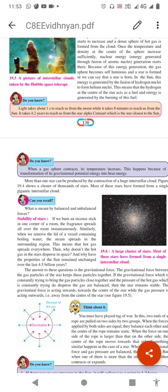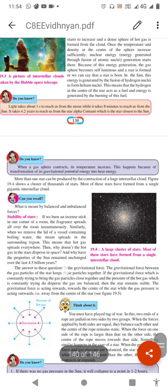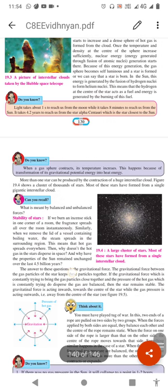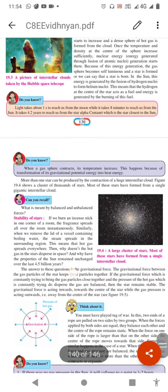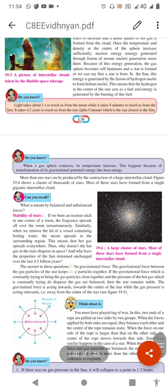When a gas sphere contracts, its temperature increases. This happens because of transformation of its gravitational potential energy into heat energy. More than one star can be produced by the contraction of a huge interstellar cloud.